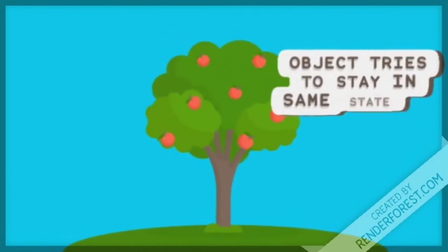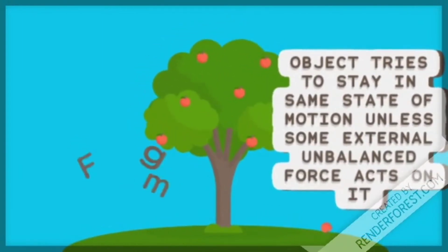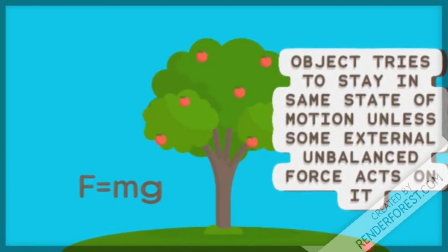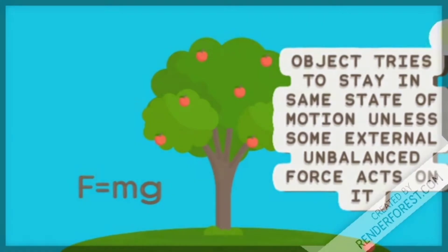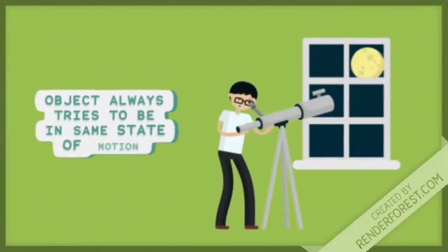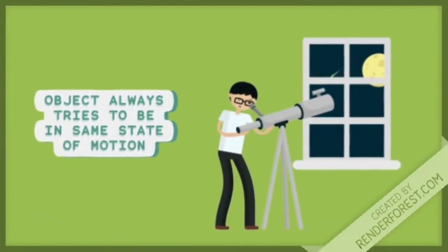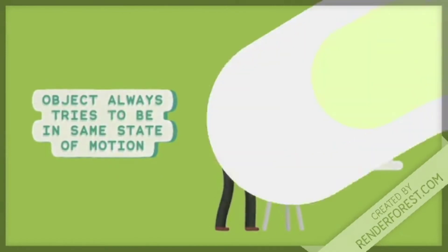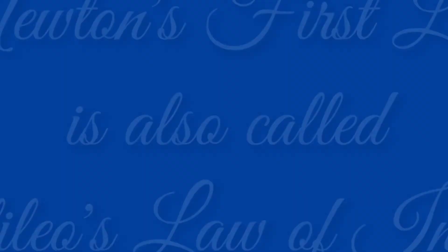This is what Newton said: an object tries to stay in the same state of motion unless some external unbalanced force acts on it. And this is what Galileo said: an object always tries to be in the same state of motion. Hence, Newton's first law is also called Galileo's law of inertia.